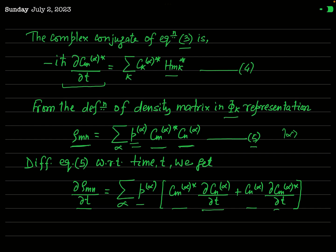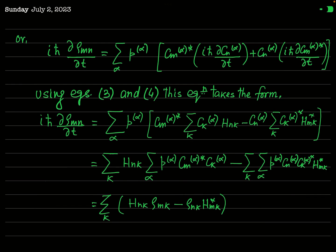We multiply both sides of this equation by the factor iħ in order to use equations 3 and 4. After multiplying by iħ, the result becomes: iħ ∂ρ_mn/∂t = Σ_α p_α [c_m^α* (iħ ∂c_n^α/∂t) + c_n^α (iħ ∂c_m^α*/∂t)]. Only the factor iħ has been introduced on both sides; the structure remains the same.